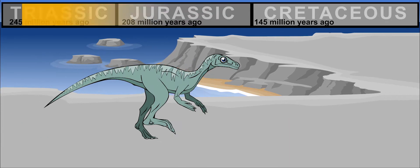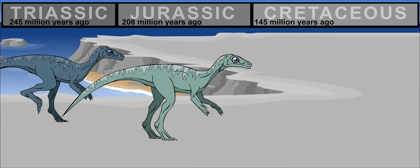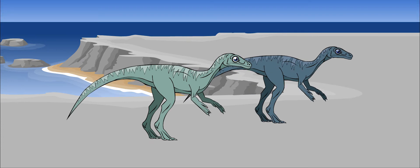Eoraptor lived about 230 million years ago. It is one of the oldest dinosaurs that have ever been found.